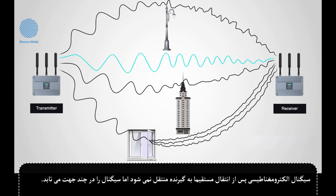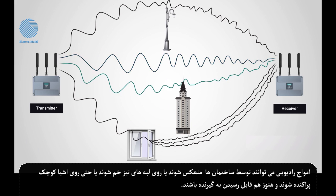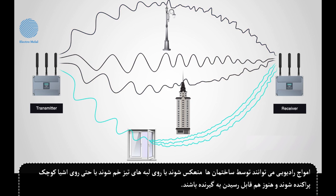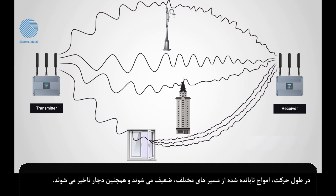An electromagnetic signal does not go straight out to a receiver after being transmitted, but radiates the signal in multiple directions. Radio waves can reflect off buildings, they can bend on sharp edges, or even scatter on small objects, and still be able to reach the receiver. During the journey, waves radiated from multiple paths endure different types of attenuation or weakening, and delay.